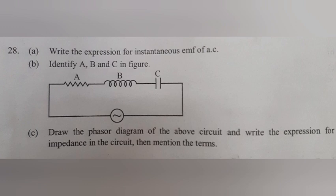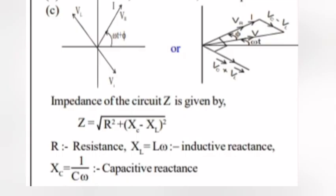Question 28C: Draw the phasor diagram of the above circuit and write the expression for impedance in the circuit with their SI units. Answer: Impedance of the circuit Z is given by Z equals root of R² plus (Xₒ minus Xₗ)². R is resistance, Xₗ equals Lω inductive reactance, Xₒ equals 1 by Cω capacitive reactance.